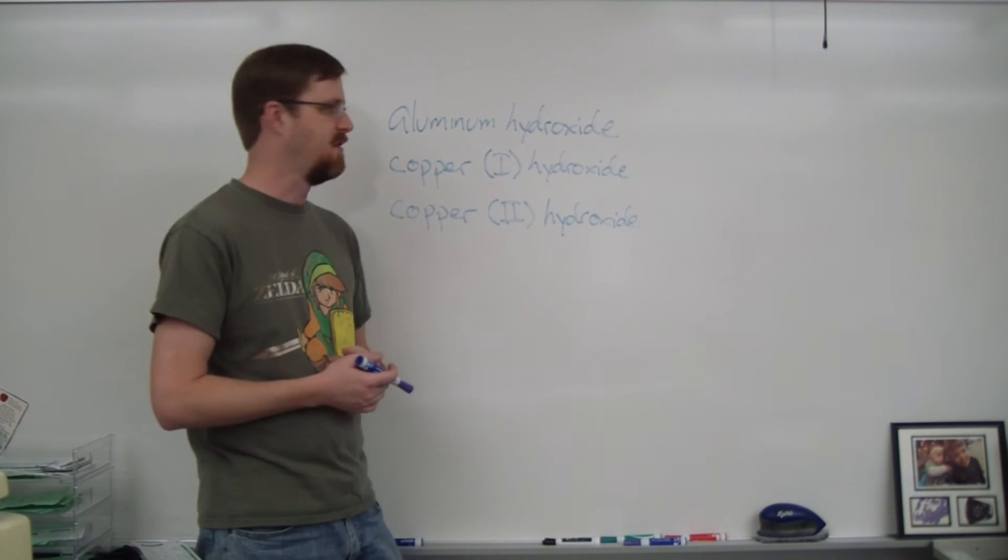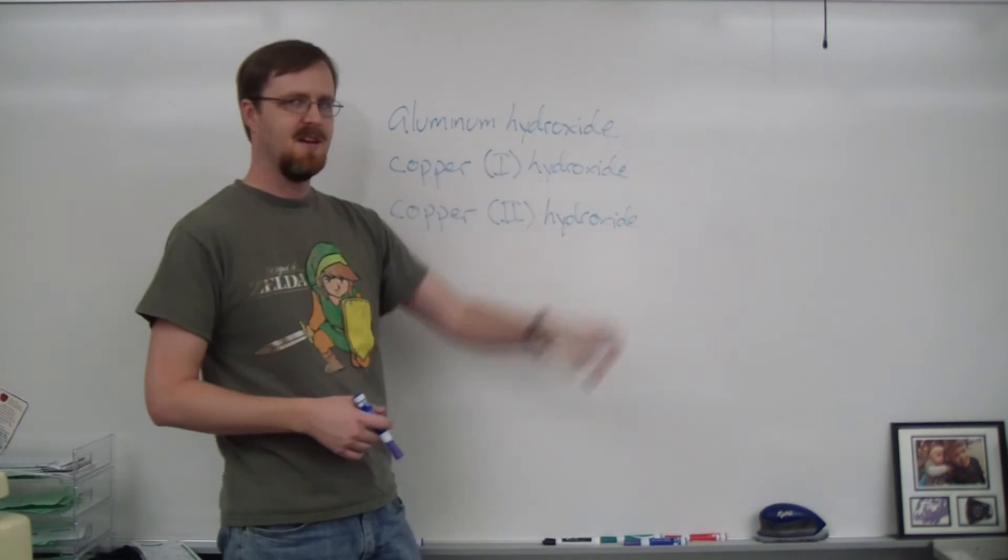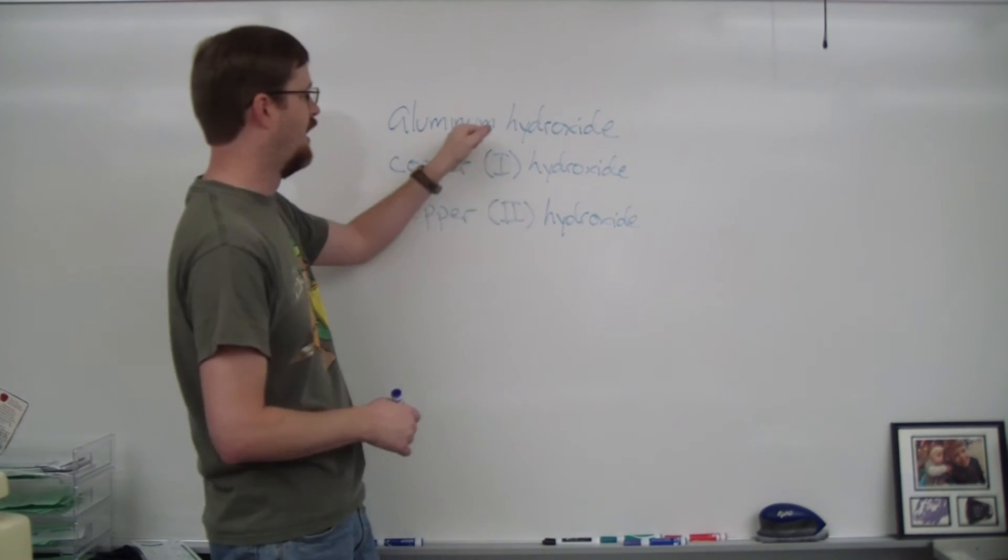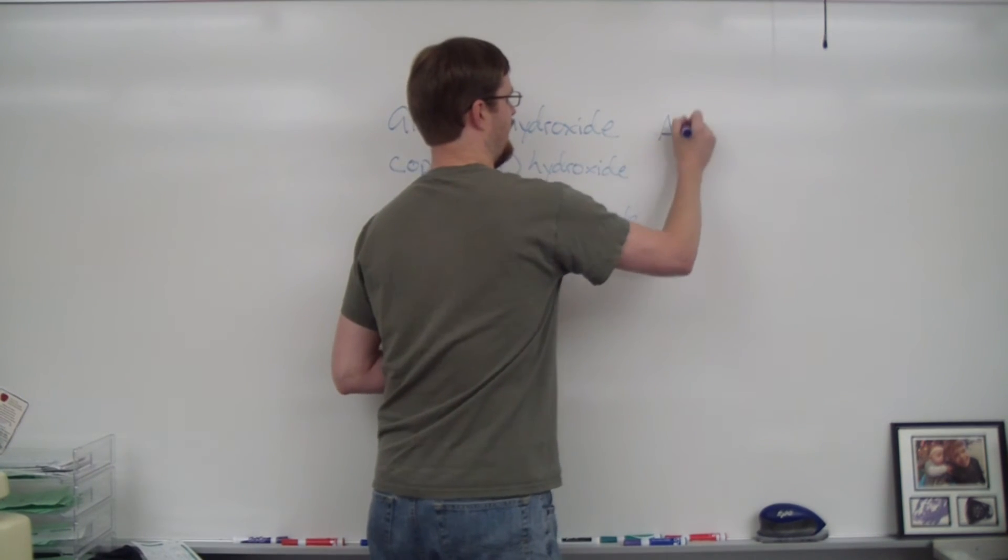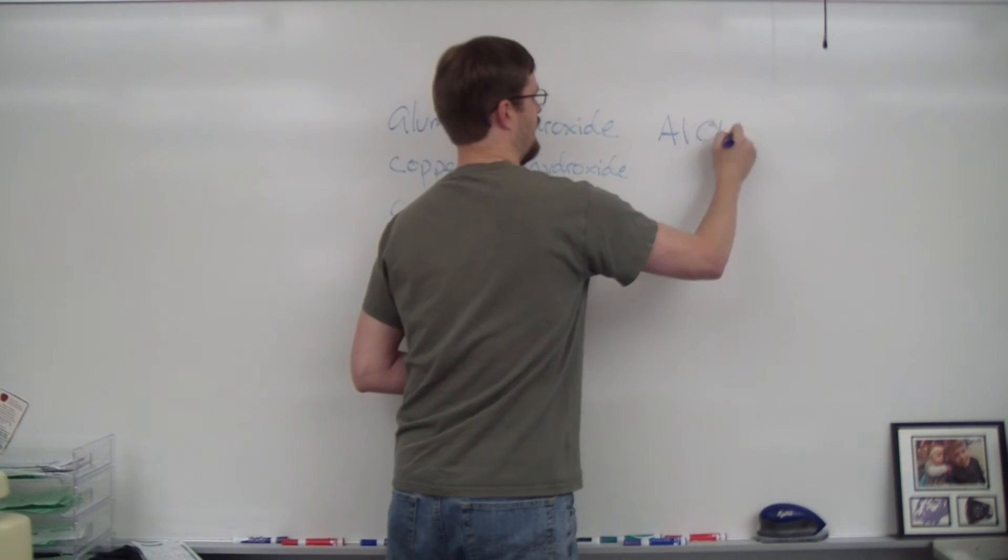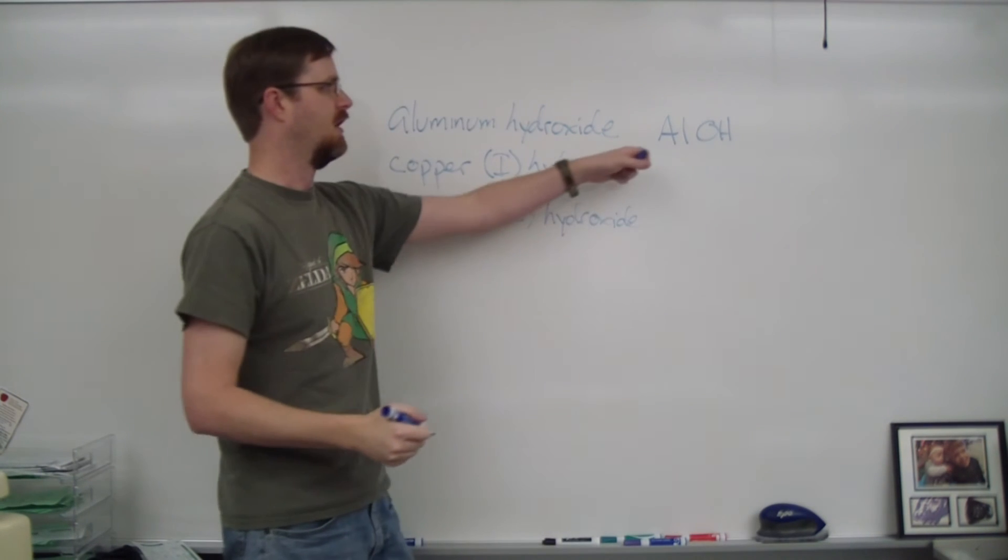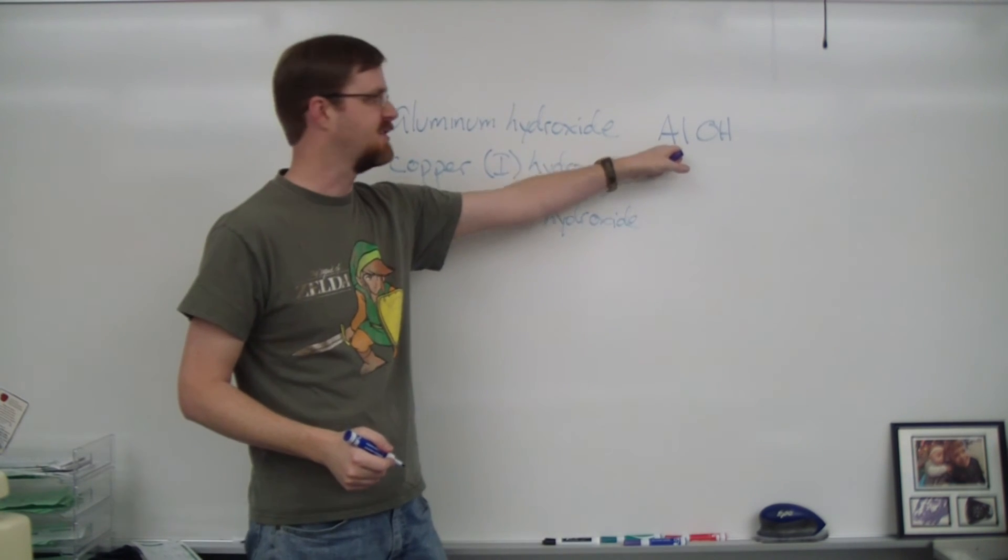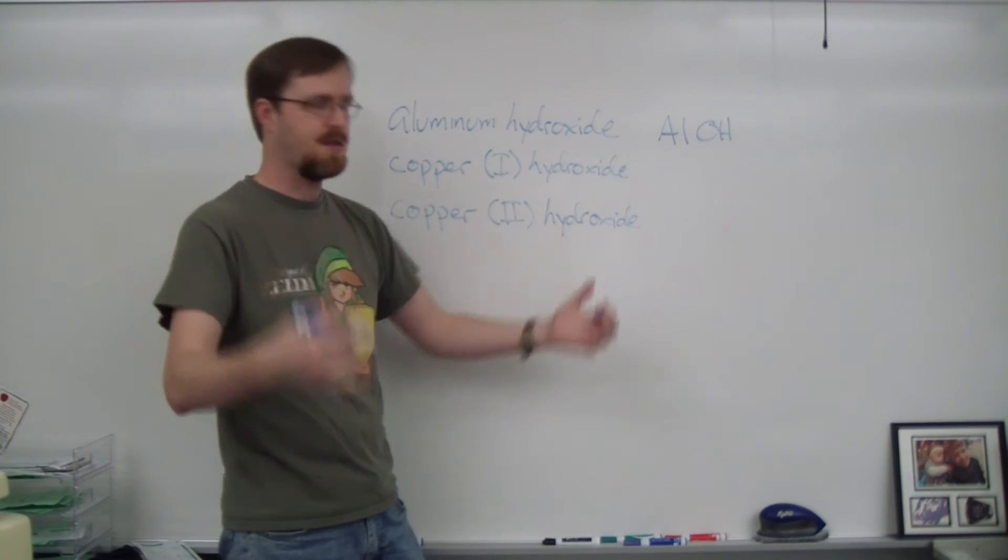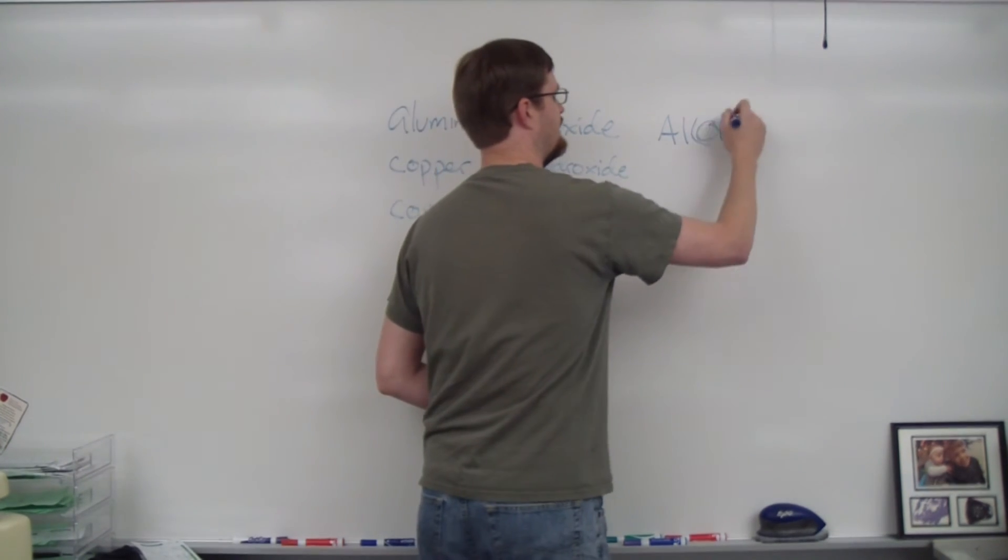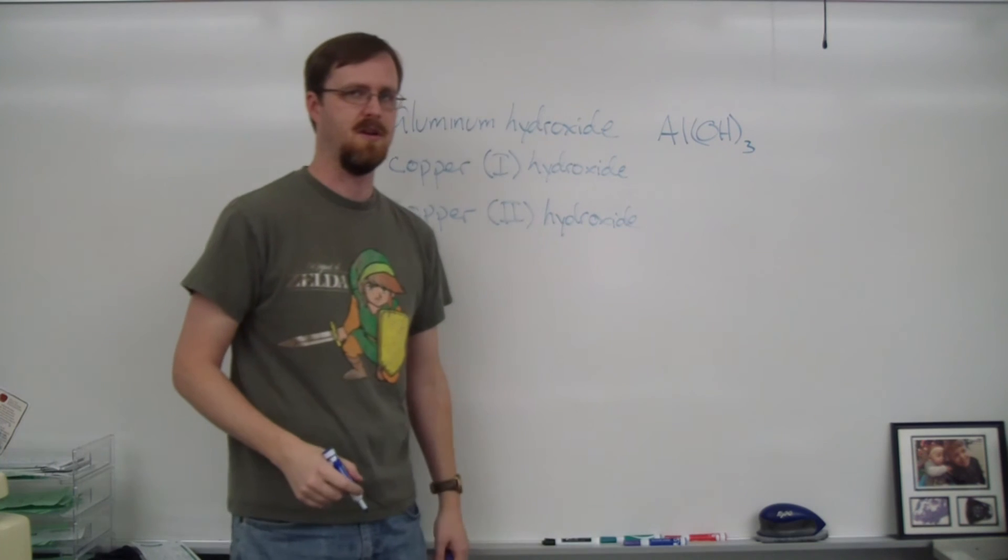All right. One final round. We're going to take names and write formulas. So here we go. Aluminum hydroxide. Well, aluminum is Al. Hydroxide is OH. Aluminum has a charge of plus three. Hydroxide is negative one. So I need three hydroxides. So I'm going to put a parentheses here and then put a three.